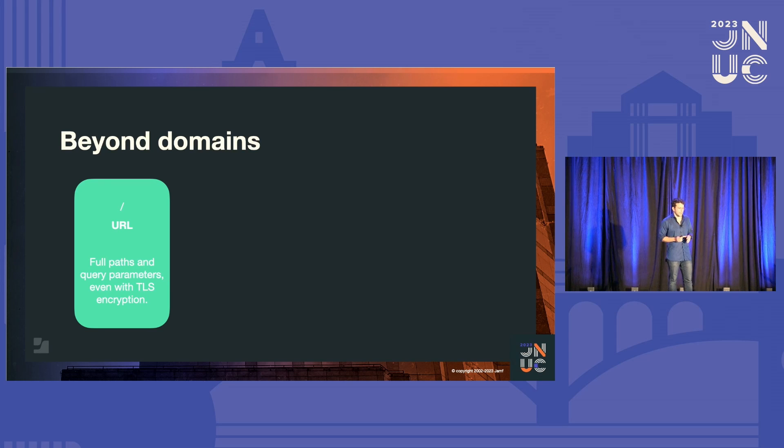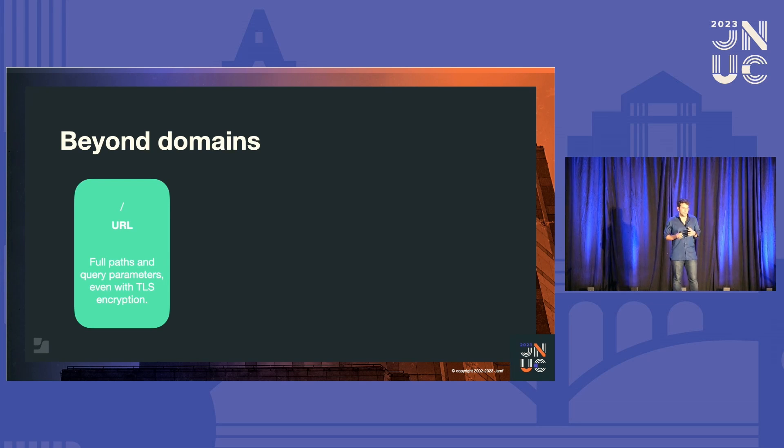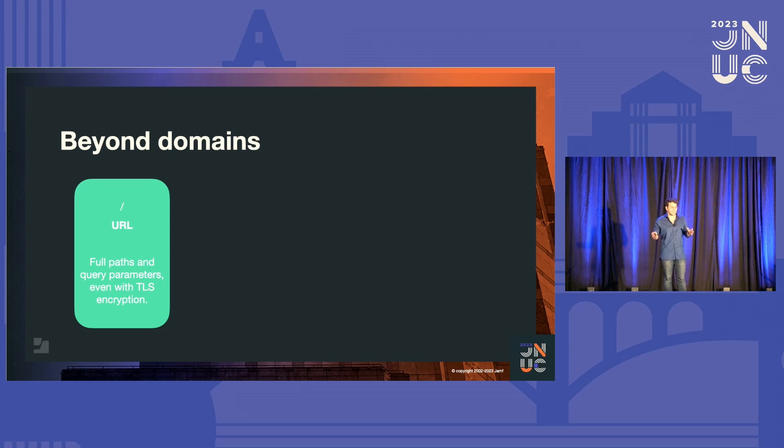We're able to evaluate URLs, including paths and query parameters. This was previously impossible to do with HTTPS traffic without TLS decryption. TLS decryption is quite taxing on the user experience and not very privacy-preserving, but with the on-device content filter, we can achieve basically the same results. With exception rules that we can create for URLs, we can get a domain that we want to block and then have a path that we want to allow — an exception rule.